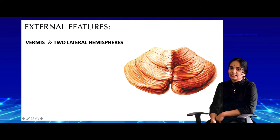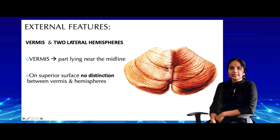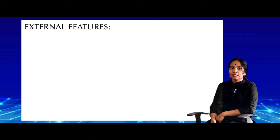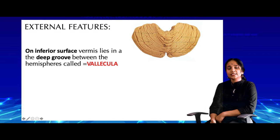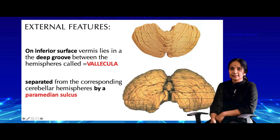The cerebellum has a vermis and two lateral hemispheres. The vermis is the part lying near the midline. On the superior surface it is not particularly distinct from the hemispheres — it is just a worm-like process. On the inferior surface, however, the vermis lies within a deep groove called the vallecula between the two hemispheres, and is separated from them by a deep sulcus on either side called the paramedian sulcus.